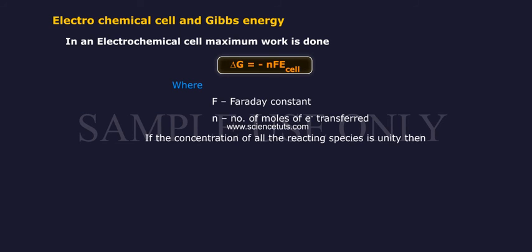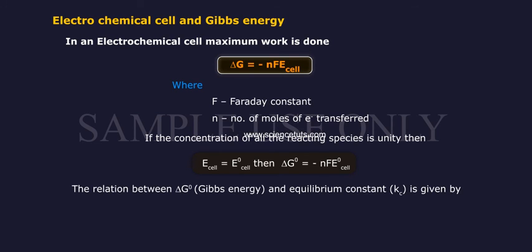If the concentration of all the reacting species is unity, then E-cell equals E-naught cell, then delta G-naught equals minus NFE-naught cell. The relation between delta G-naught Gibbs energy and equilibrium constant Kc is given by delta G-naught equals minus 2.303 RT log Kc.